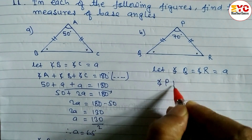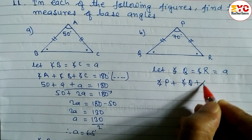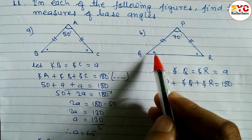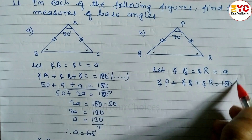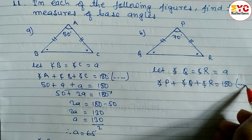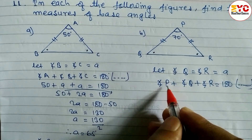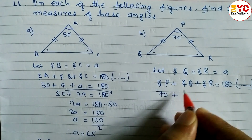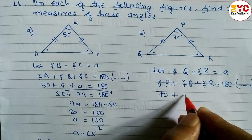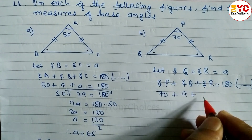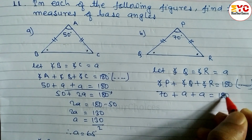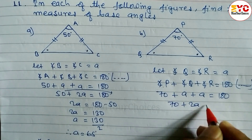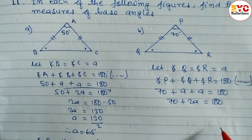Now, angle P plus angle Q plus angle R is equal to 180. This angle plus this angle plus this angle is equal to 180 degrees — the sum of angles of a triangle. Angle P, what is the value? 70. So we write 70 plus angle Q. What we let? A. Plus angle R, also A, is equal to 180.